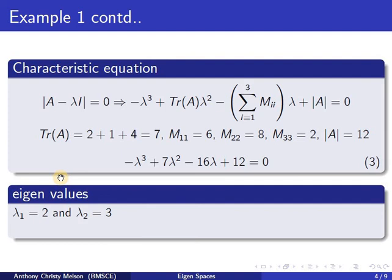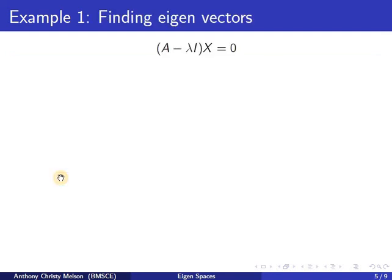Since equation 3 is a cubic equation, we should have three roots, therefore three Eigen values. The properties of Eigen values give us that the sum of Eigen values equals the trace of the matrix. Therefore, the missing Eigen value is 2, and hence lambda equal to 2 is a repeated Eigen value.